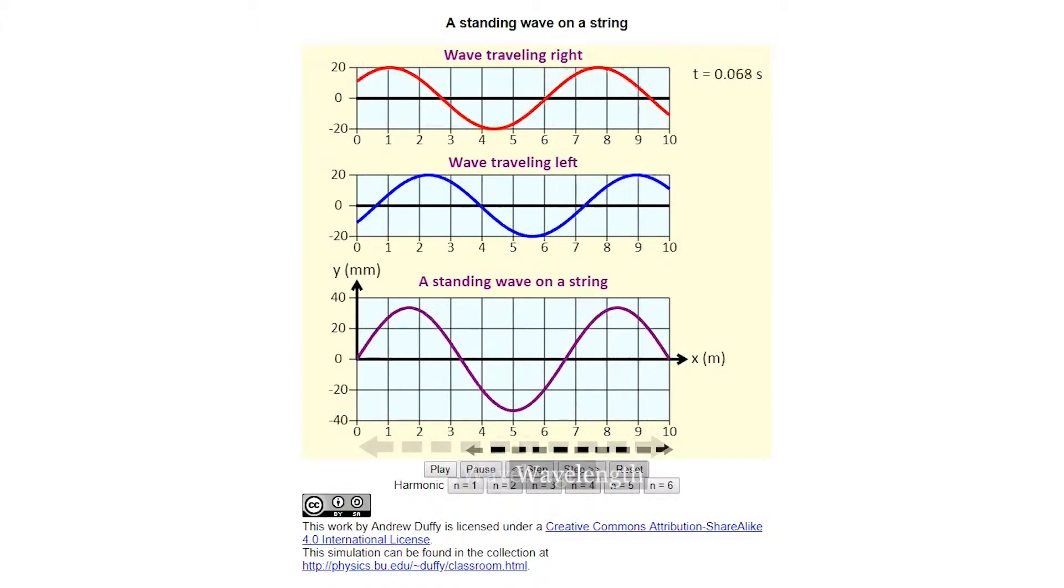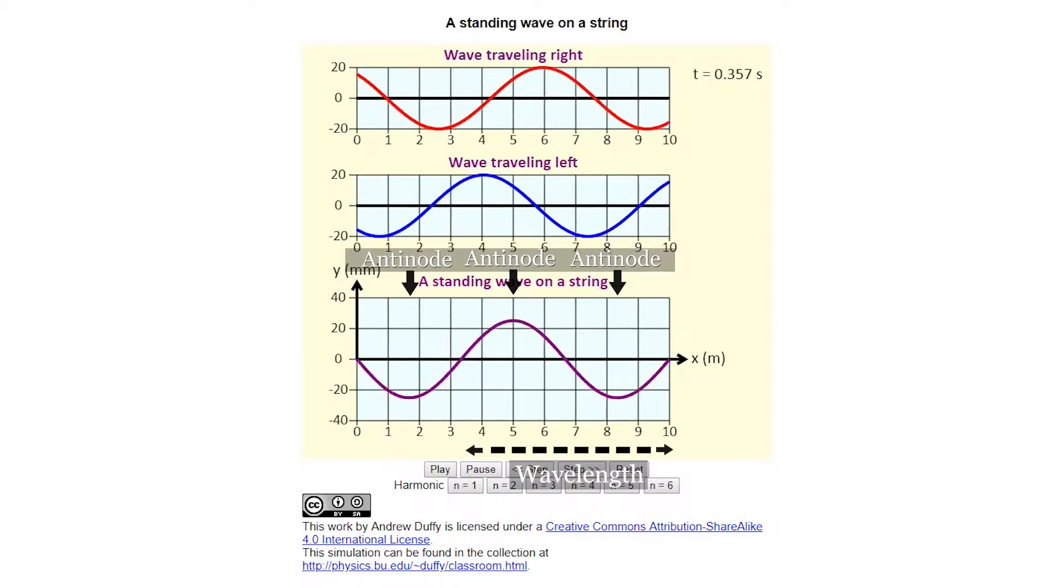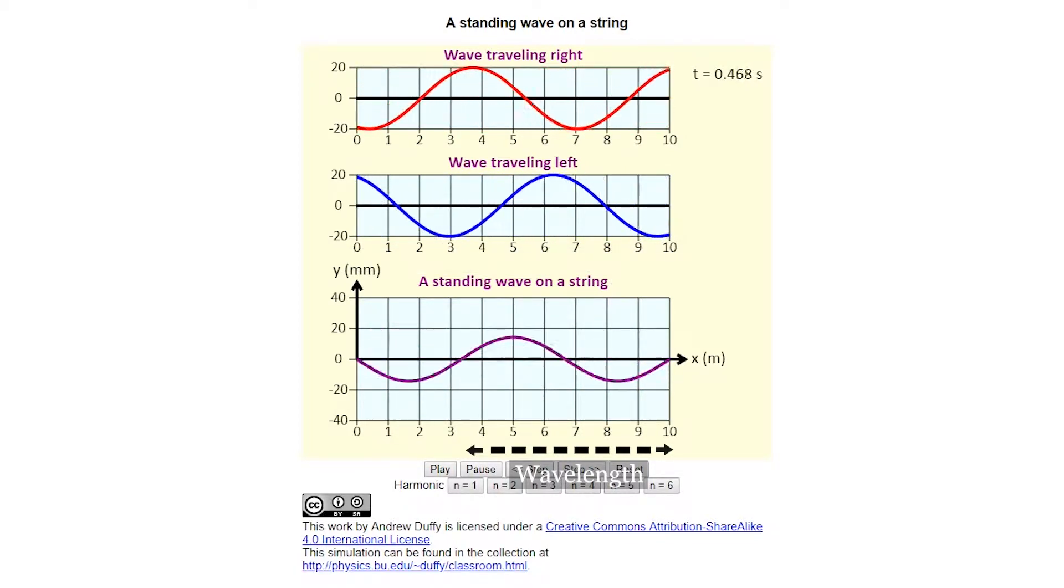Here is the second overtone, where the wavelength is two-thirds the length of the string. It has three antinodes. This simulation only illustrates the few waves where a wave and its reflection interfere constructively at fixed locations and create a standing wave.